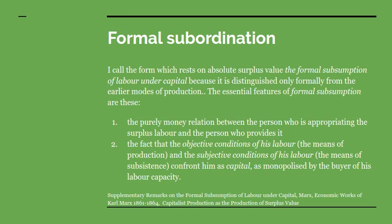Now, the first phase of capitalism, he says, there is only a formal subordination of labour to capital. Quoting from his 1861 manuscript: 'I call the form which rests on absolute surplus value the formal subsumption of labour under capital, because it is distinguished only formally from the earlier modes of production.' The essential features of formal subsumption are: first, there is a purely monetary relation between the person appropriating the surplus labour and the person who provides it; and second, the objective conditions of his labour — the means of production — and the subjective conditions — means of subsistence — confront him as capital, monopolised by the buyer of his labour power.